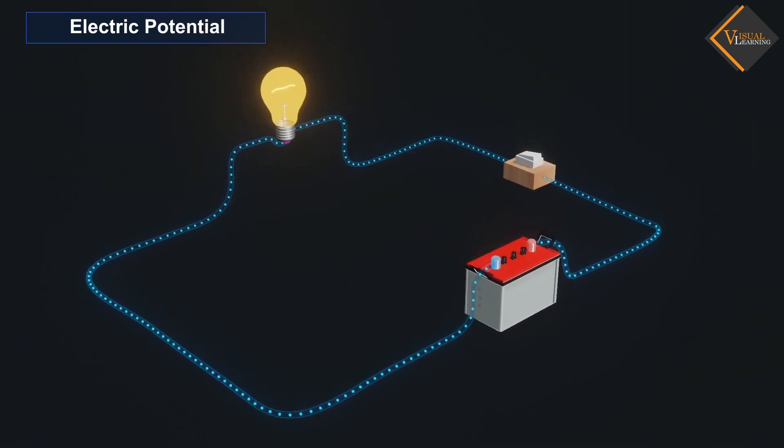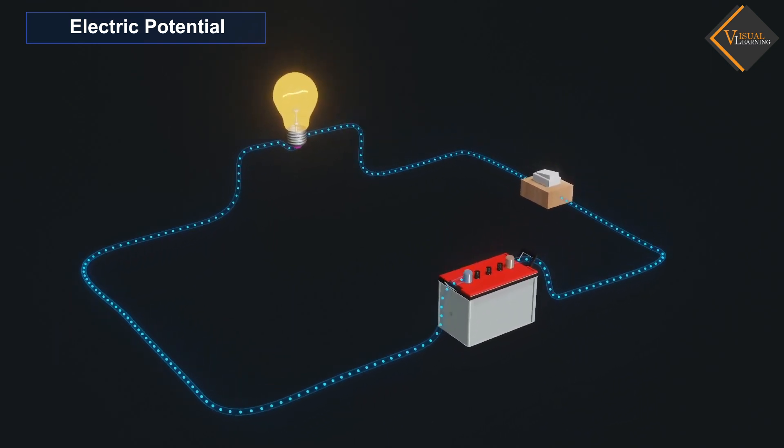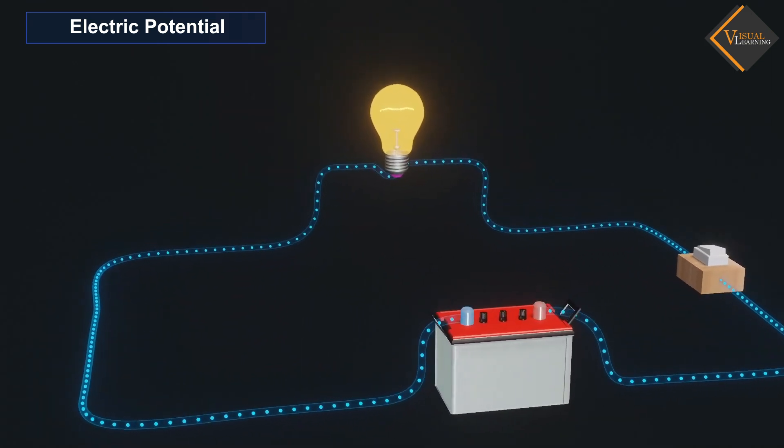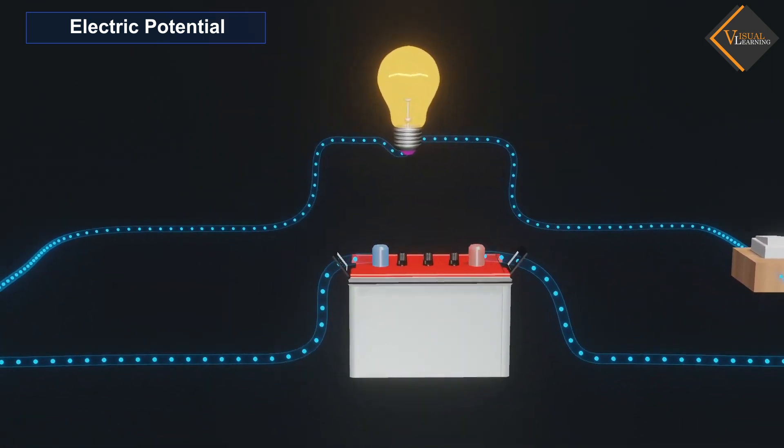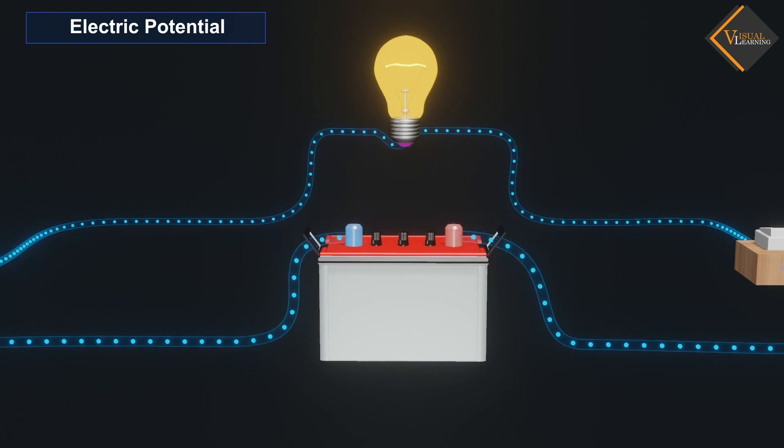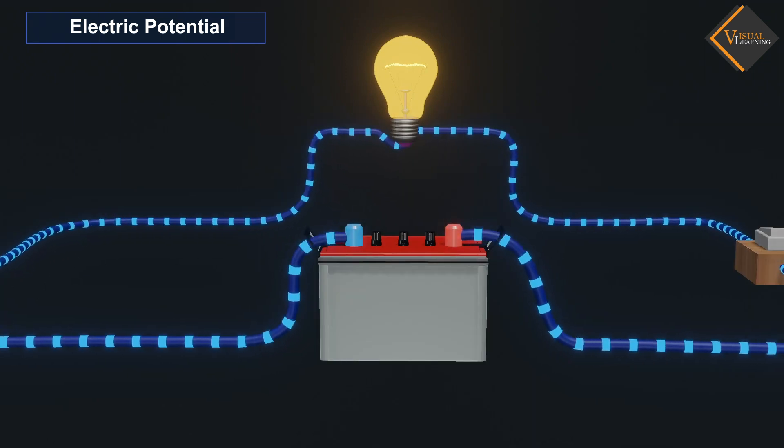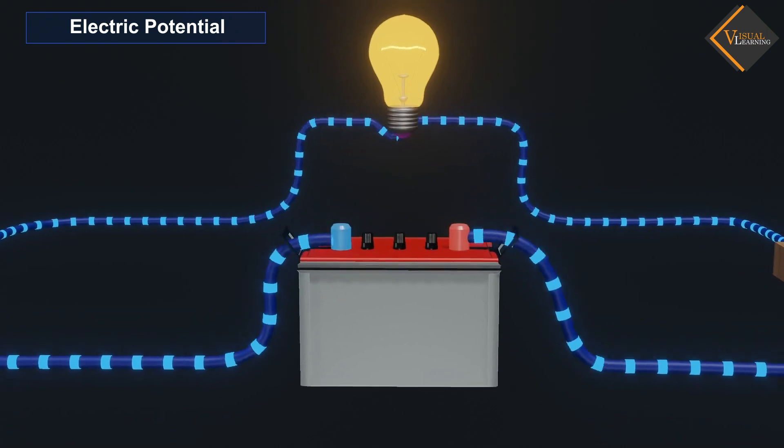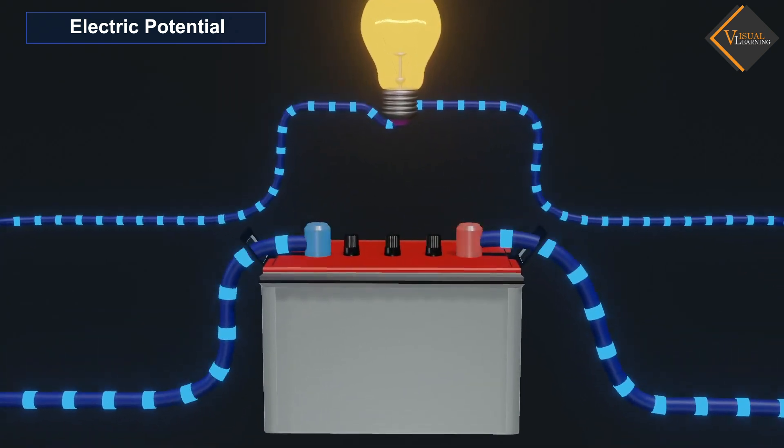As we know, electrons in the wire do not flow by themselves. It requires an external force to make them flow in a particular direction. And this flow of electrons generates current. This external force can be provided by the battery.